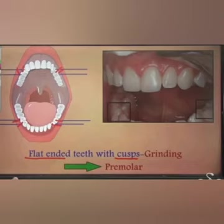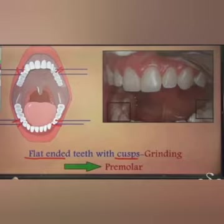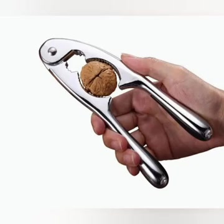Two premolars are present on either side of the canines, so there are four premolars in each jaw — four in the upper jaw and four in the lower jaw — totaling eight premolars in our mouth. The premolars are broad teeth used for cracking hard food such as nuts, so they act like nutcrackers.